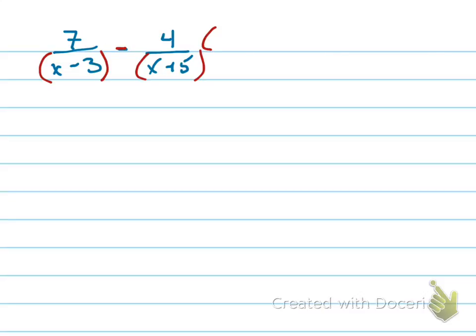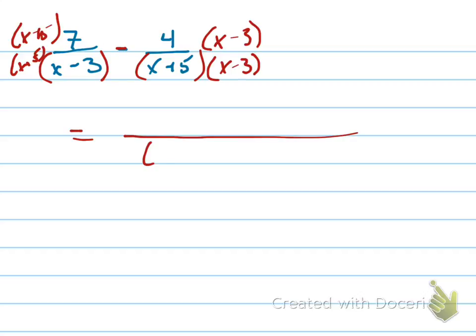So I need to multiply this by x minus 3 over x minus 3. And I need to multiply this by x plus 5 over x plus 5. And that gives me the denominator, which is x minus 3 times x plus 5 is going to be the denominator.